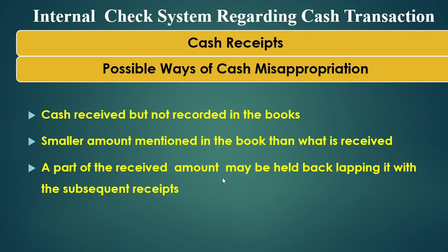For example, out of 5,000 rupees, 500 rupees is kept by the cashier, and he records this 500 rupees along with the next receipt. The next receipt comes after a month, and at that point all the amount is recorded. The next receipt is 500 rupees, so 500 plus the lapping 500 equals 1,000 rupees recorded. But for one month, 500 rupees was not with the company — it was with the cashier for his personal purpose. This too is a form of misappropriation.